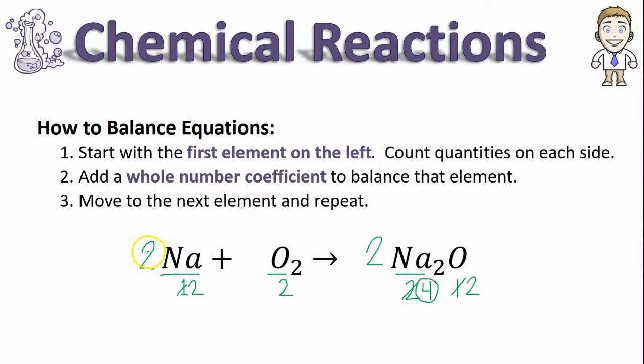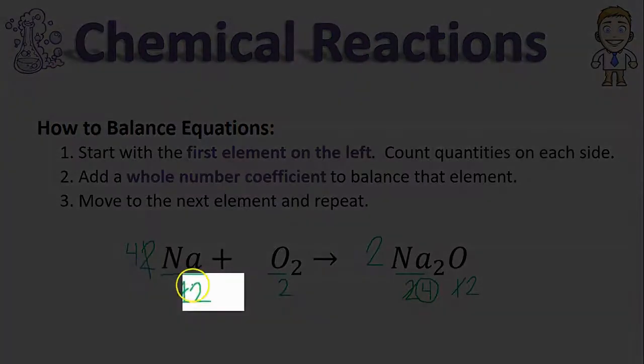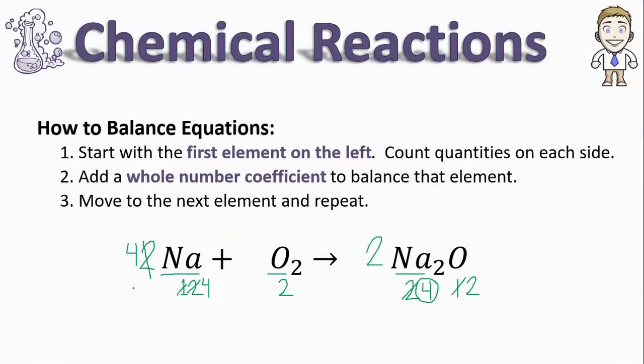My sodiums have changed to four, which means this two no longer applies. Sometimes when you balance you have to go back and forth and maybe erase or cross off some things you thought you were going to add. This two now has to be changed to a coefficient of four so that the amount of sodiums remain balanced. The final coefficient list for this reaction is 4, 1, 2.